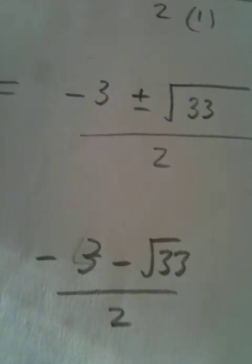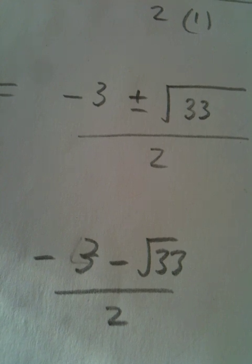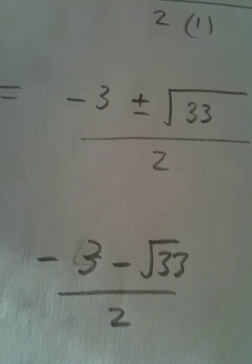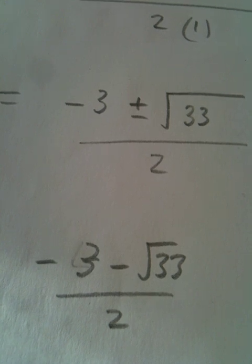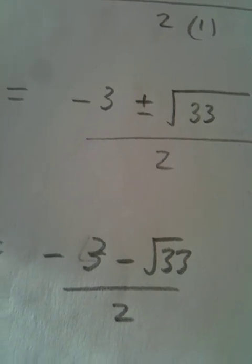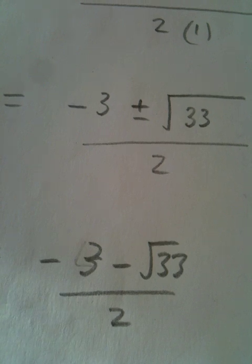So firstly, looking at the negative 3 minus root of 33 all over 2. If you've got a nice Casio calculator, use the fraction button and put it exactly as you see it. If you're using one of the white calculators that the school sell, put the top in a bracket or calculate the top part first. Then divide by 2.